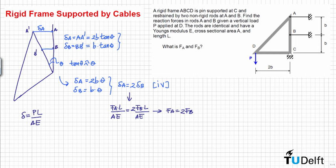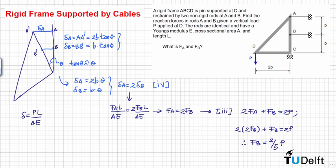Substituting FA equals 2*FB into equation 3, which states that 2 times FA plus FB equals 2P, we get 2 times 2*FB plus FB equals 2P, giving 5*FB equals 2P. Therefore FB equals 2/5 times P. Then, using FA equals 2 times FB, we find FA equals 4/5 times P.